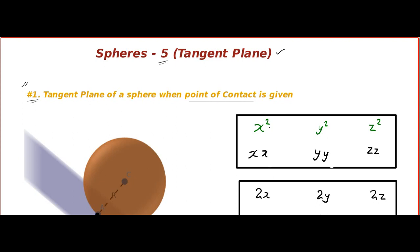I will give you one memory aid to remember the formula. There will be three variables: x, y, z. What you do is you write x squared as x times x, and put x1. Let's say the point of contact is (x1, y1, z1).